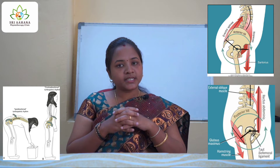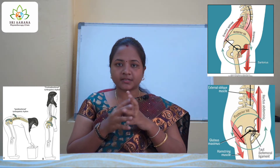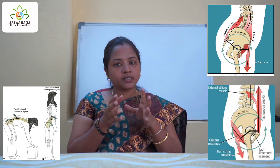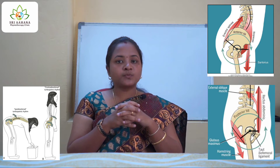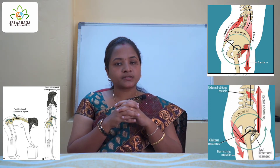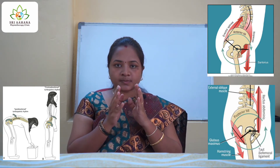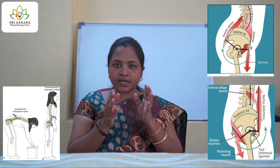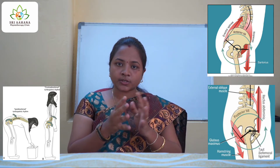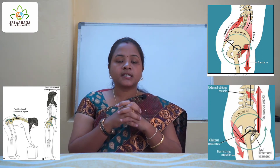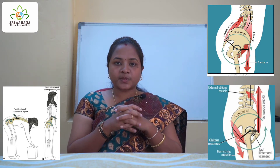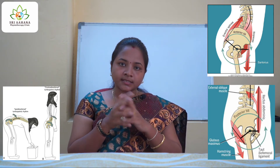In bringing about trunk flexion — say if I have to bend down and touch my toes — I should bring about some amount of trunk flexion. This trunk flexion is split into two parts: one is the lumbar flexion happening up to 45 degrees, and the other is the anterior tilting of the pelvis, which contributes to around 60 degrees of the motion.